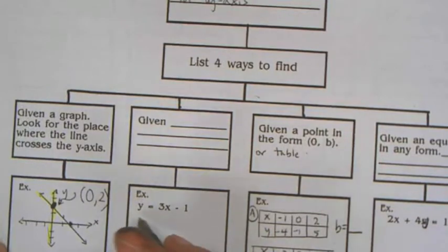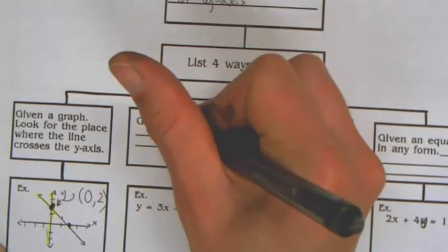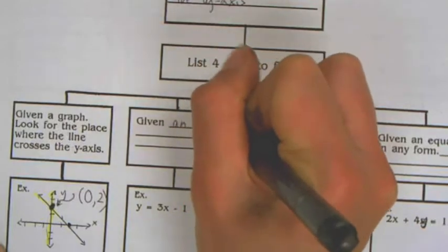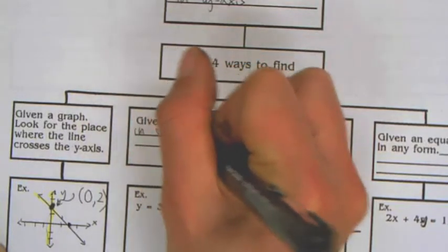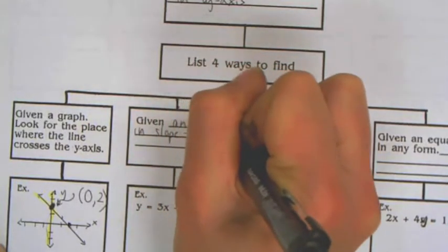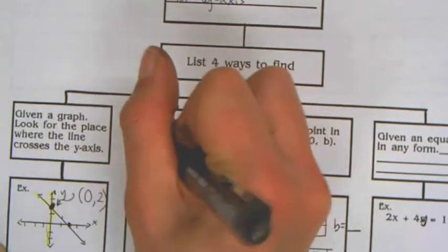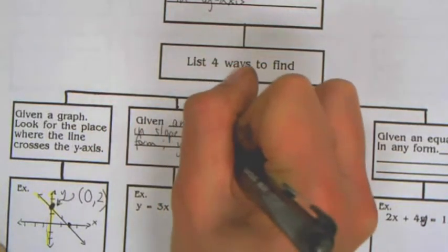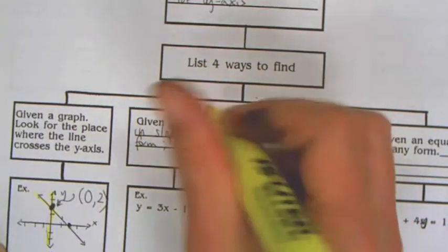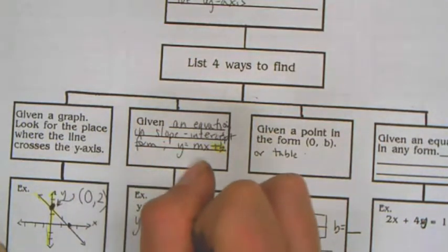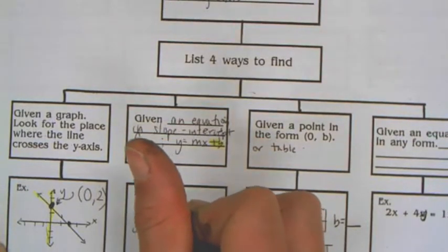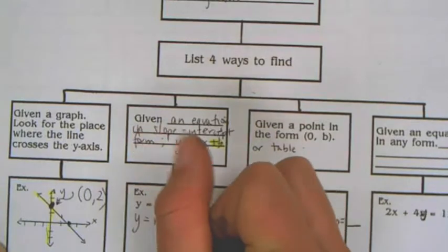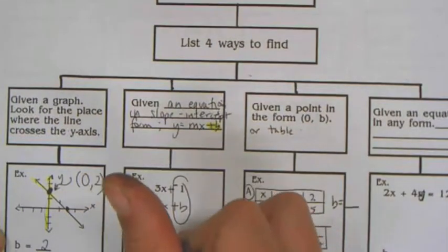In the United States, the variable that we use for y-intercept is b. I know it's different in other parts of the world. In the second problem, we're given an equation in the slope-intercept form, or y = mx + b form, where b is your y-intercept. Looking at y = mx + b, subtraction is the same as adding the opposite, so here is my y-intercept, which is negative 1.